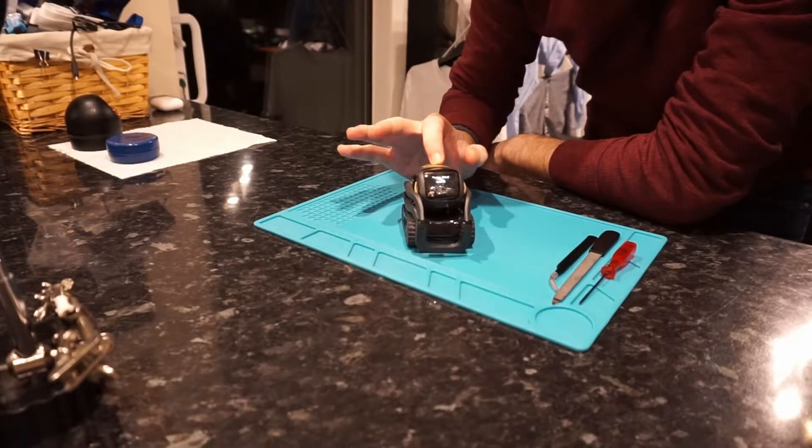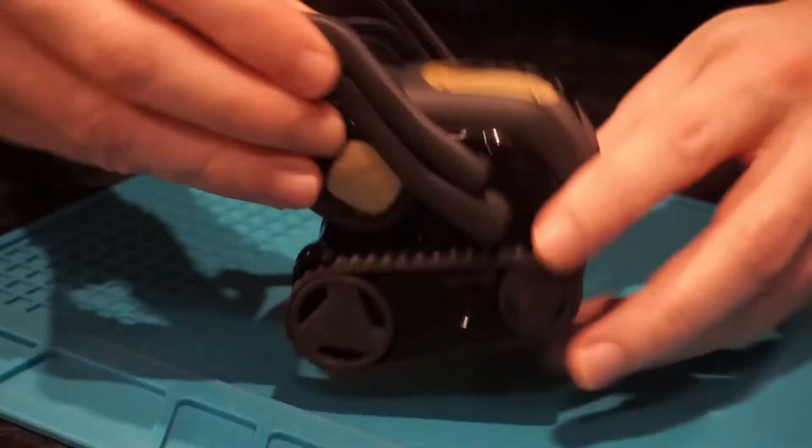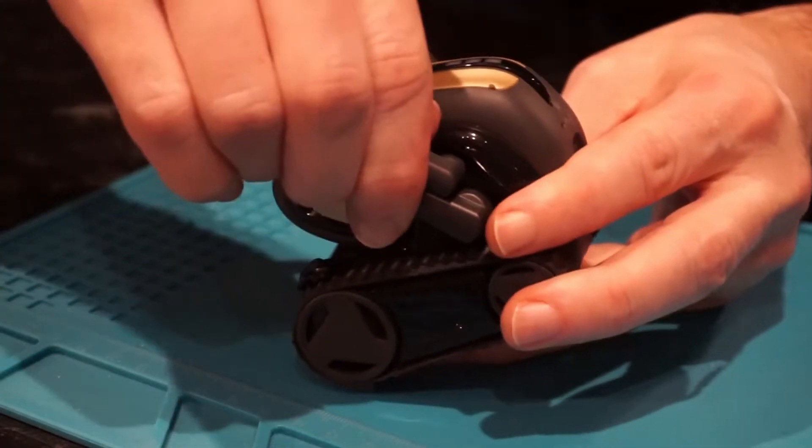First thing we want to do is just power down the robot. You just keep your finger on the power button there and he'll switch off. And then we just remove the arms. Now, if you've ever done this on a Cosmo, it's exactly the same setup.